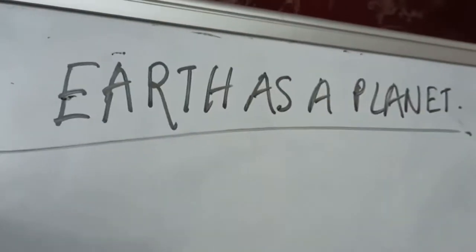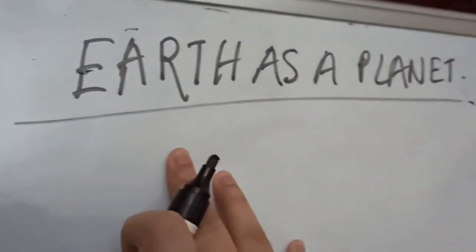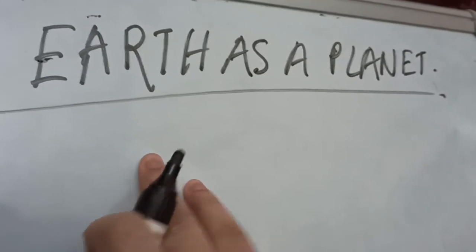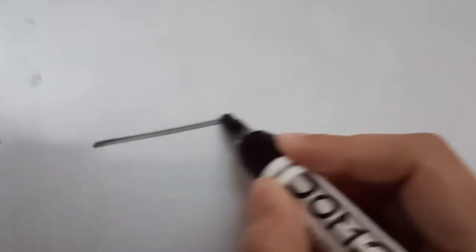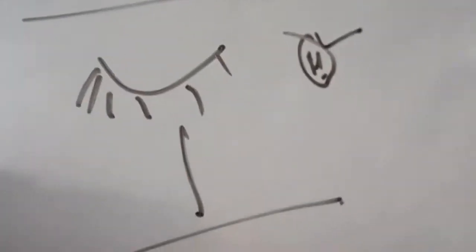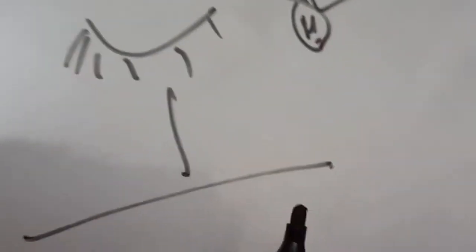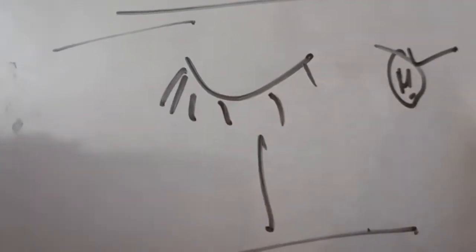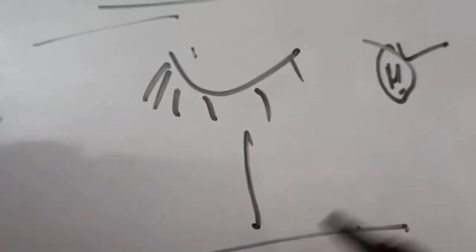Hello students of class 9. This is the first chapter in your class 9 syllabus: the Earth as a planet. Previously, people thought that the Earth is a flat disk because when they stand, they can see the sun above them and the moon above them. From this, they thought that the Earth is a flat disk with some edges and there is a sky above it, and the sun and moon are rotating around the Earth.